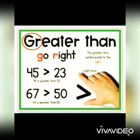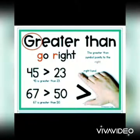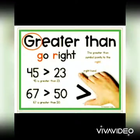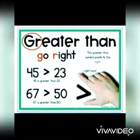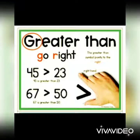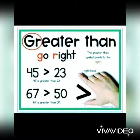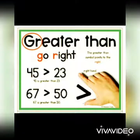The greater than symbol points to the right. For example, 45 and 23 — 45 is greater than 23, so we will use the greater than symbol, the right hand concept. Let's take another example: 67 and 50 — 67 is greater than 50, so we will use the greater than symbol. 67 is greater than 50.